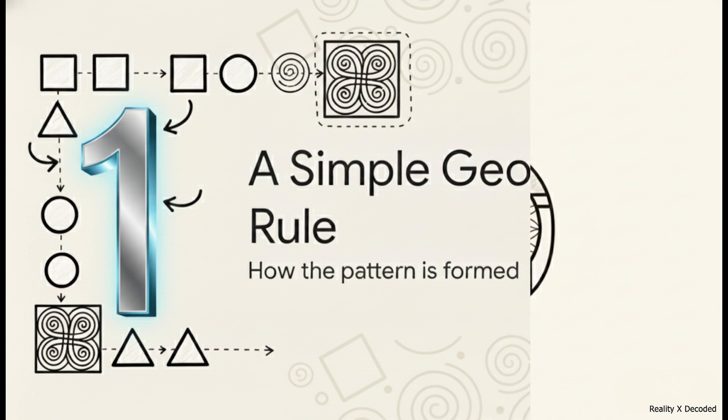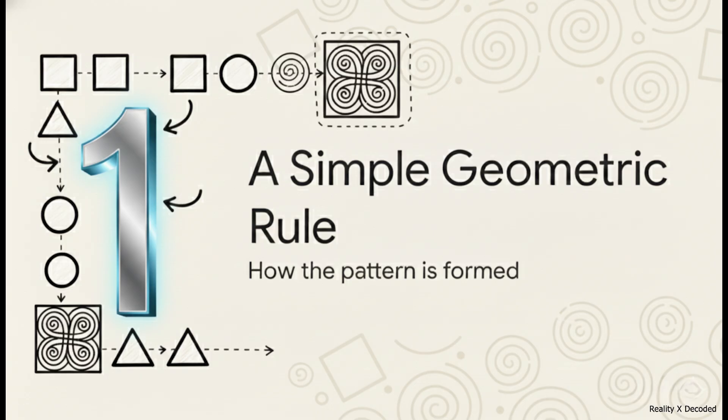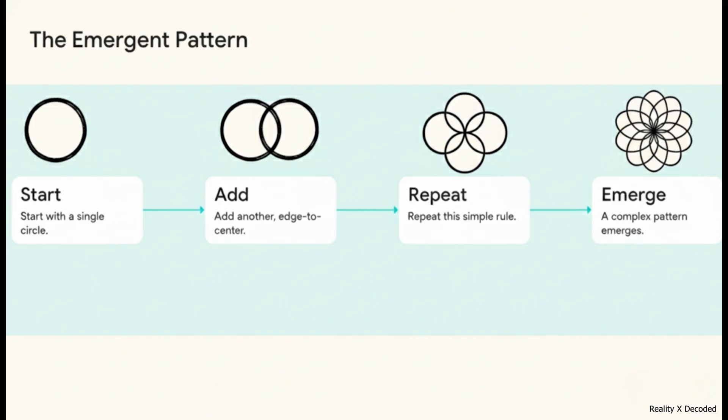Let's get into how this actually works. To understand the whole mystery, first we have to see how this seemingly complex pattern is made. And you're about to find out, it is surprisingly simple. It all begins with the most basic shape there is, a circle. Then you draw another circle, the exact same size, but you put it center right on the edge of the first one.